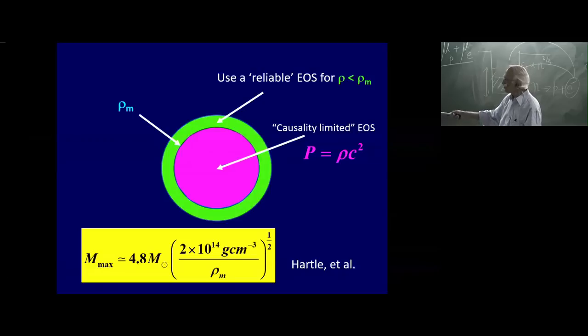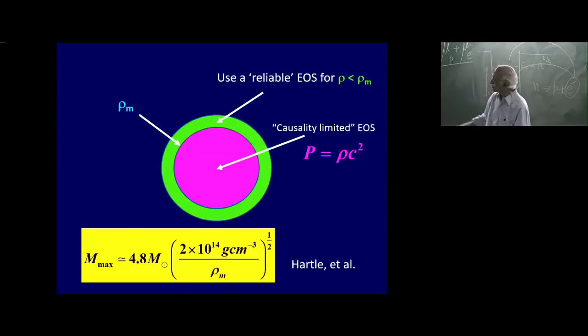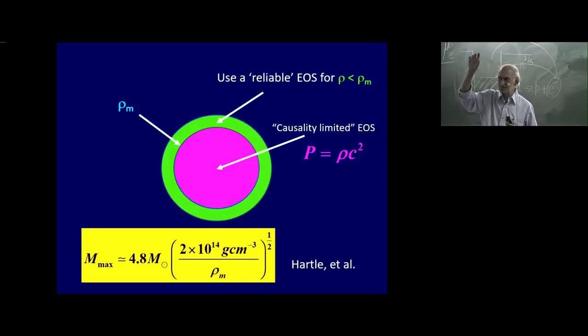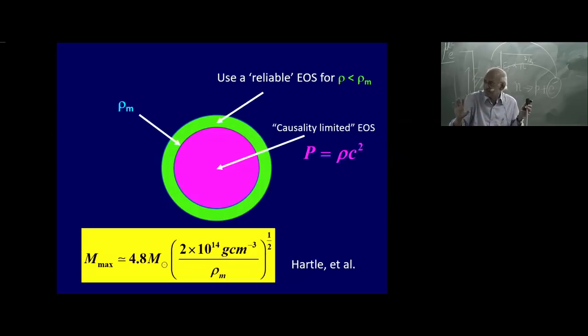Roughly speaking, the theoretical limit for the maximum mass of a neutron star — based on microscopic stability and causality — is around 4.8 solar masses. This is not to say a real neutron star can be that massive; it says you won't violate any physics. Something else may intervene and it may become a black hole due to some other dynamical instability.